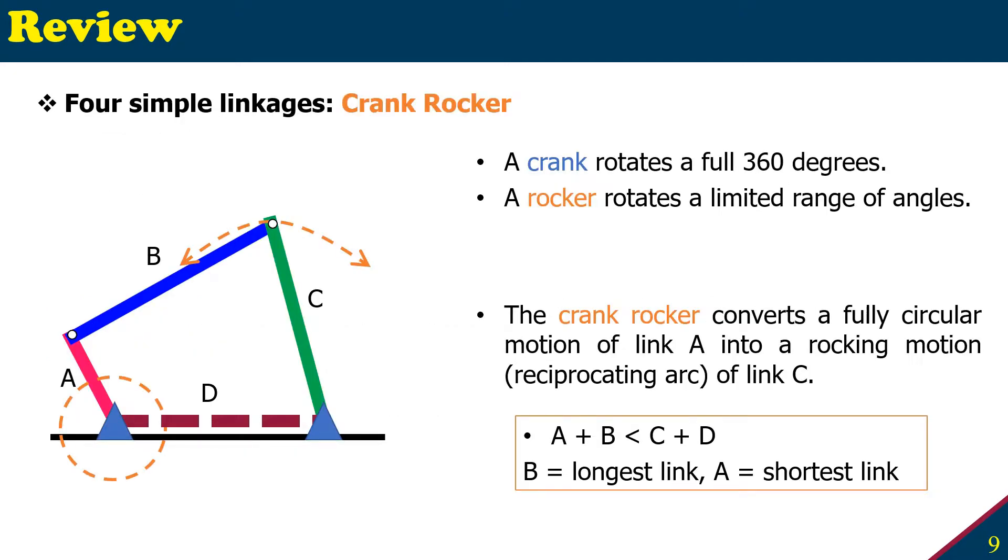So the first one is the crank rocker. A crank can rotate a full 360 degrees, full rotation. If it doesn't rotate full 360 degrees and has a limited range of angle movement, then it is called a rocker.